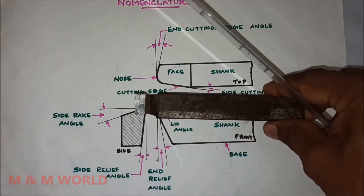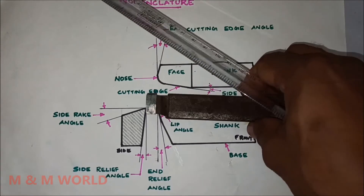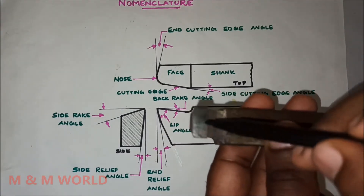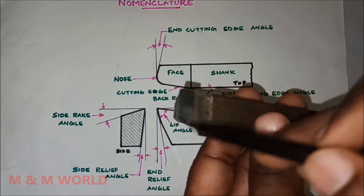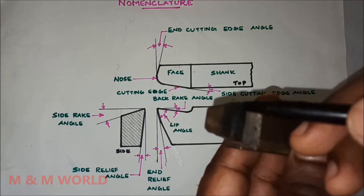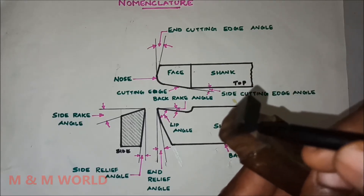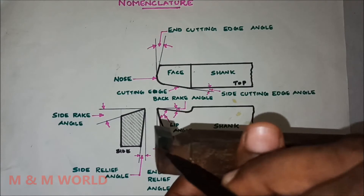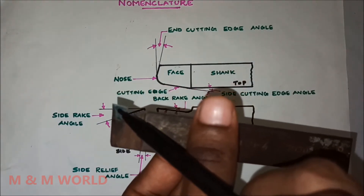The second element is the flank. The flank is the surface adjacent to the cutting edge and below it when the tool is kept in a horizontal position. You have two cutting edges: the end cutting edge and the side cutting edge. The surface adjacent to the end cutting edge is the end flank, and the surface adjacent to the side cutting edge is the side flank.